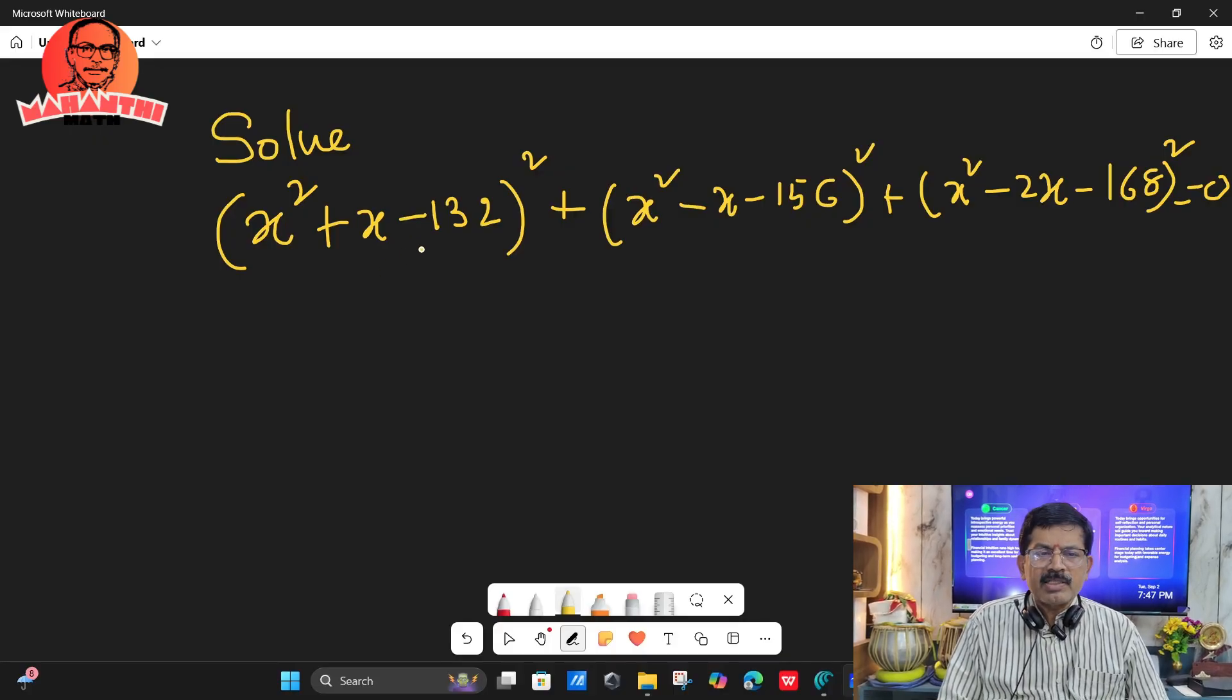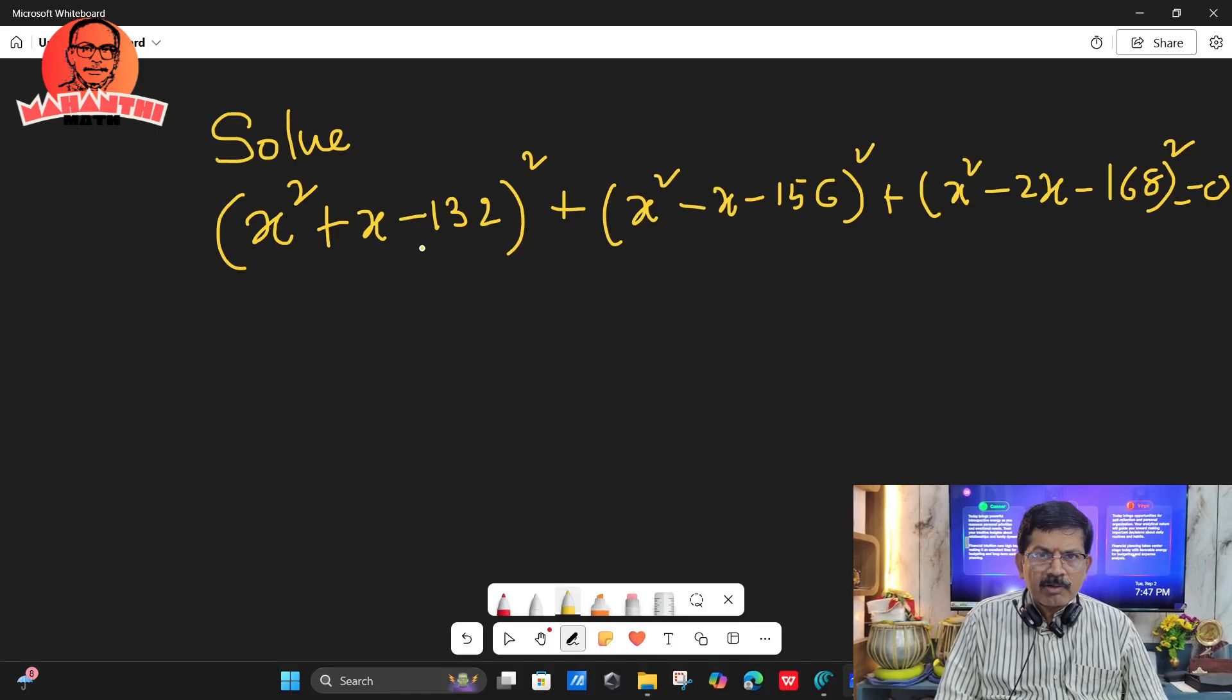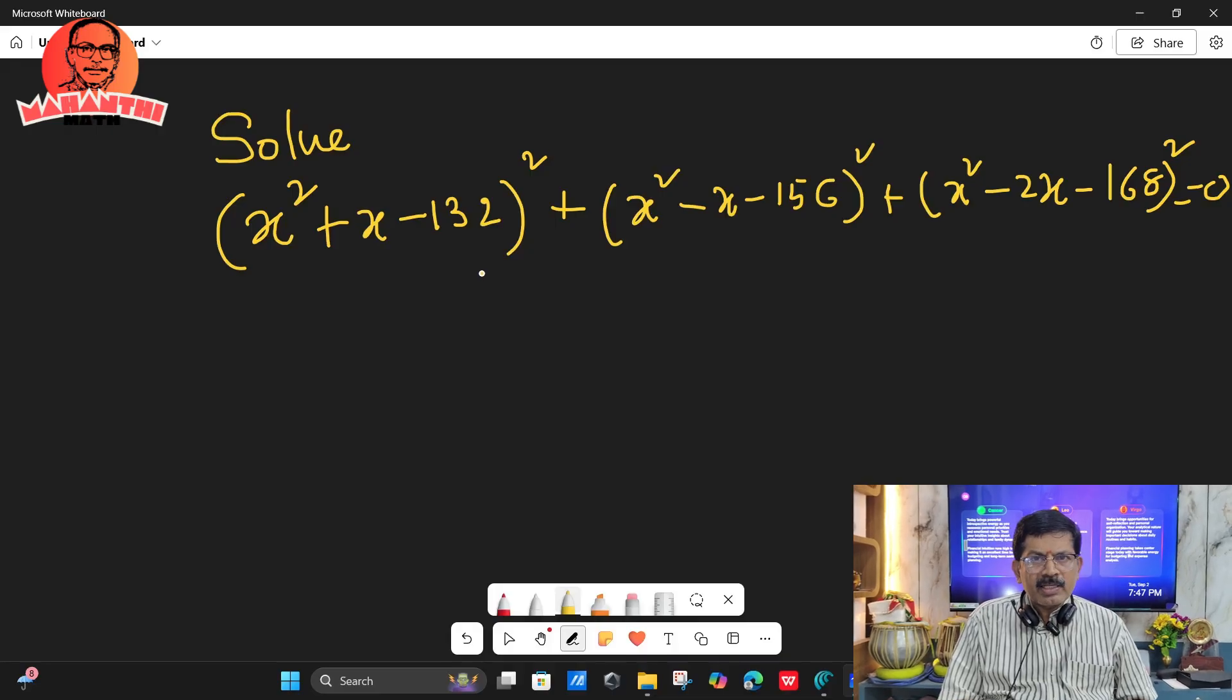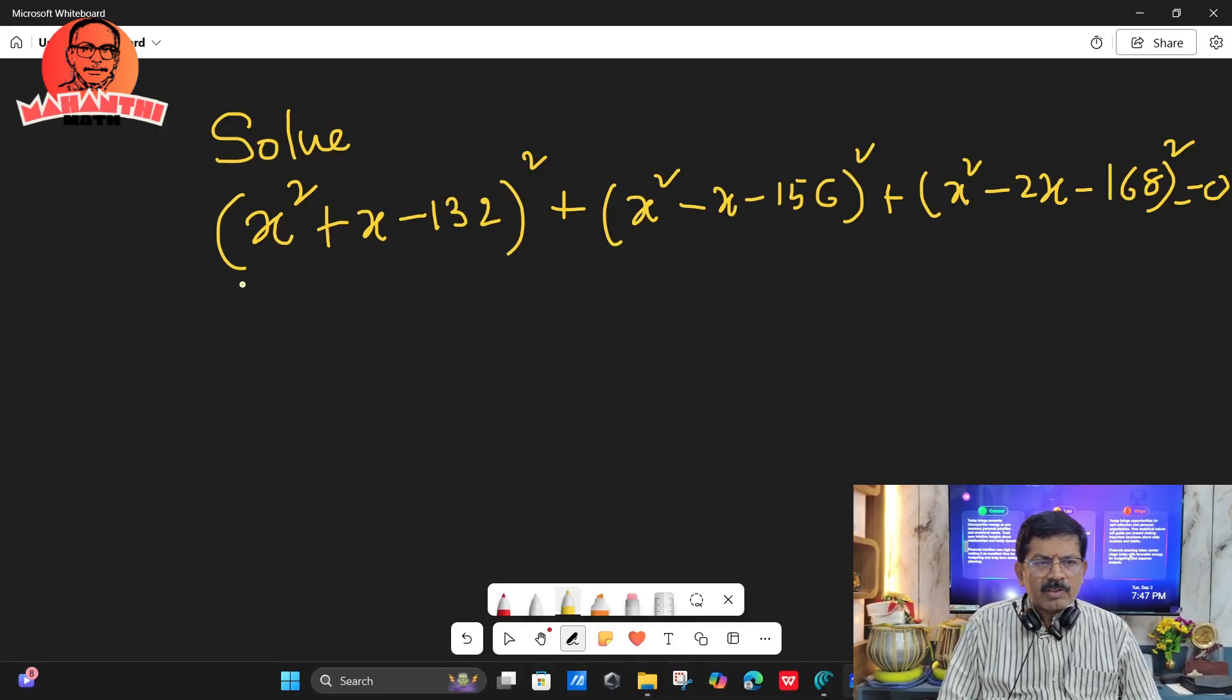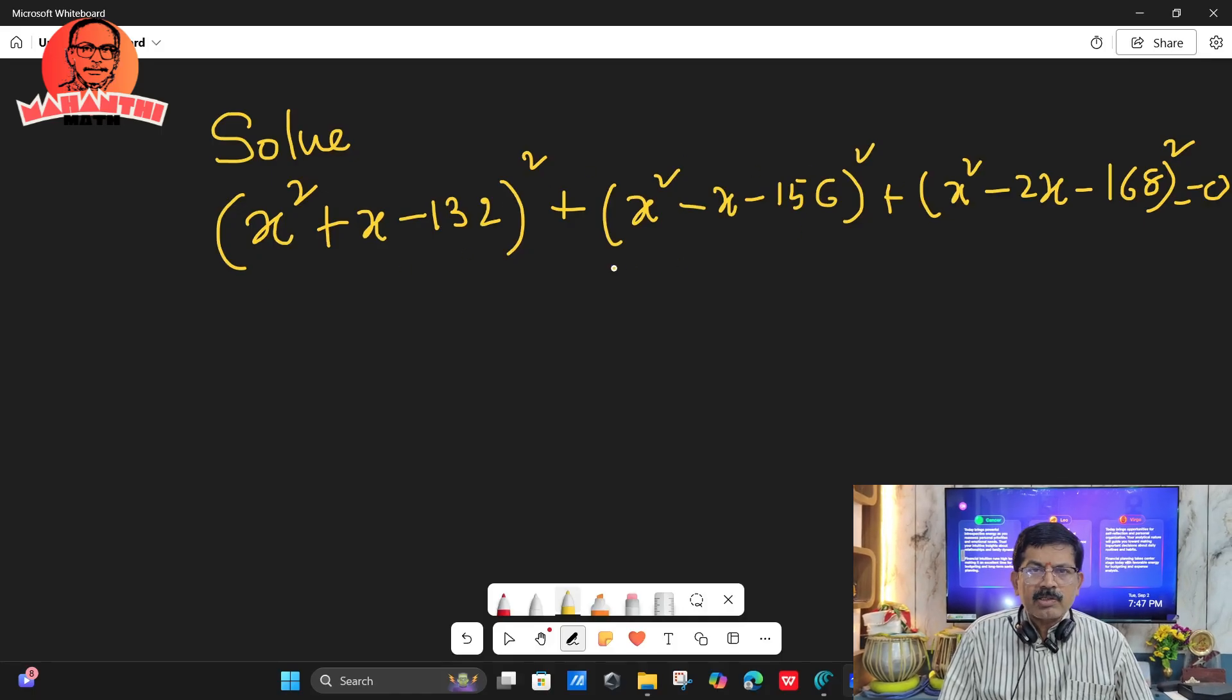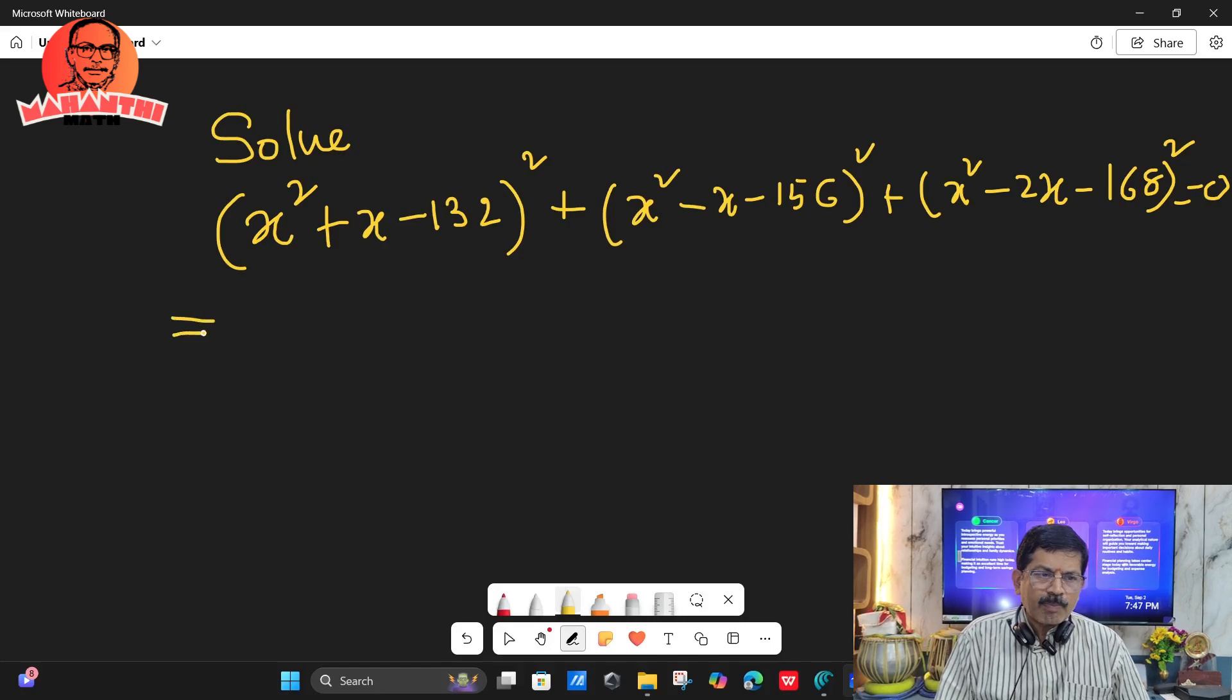But the concept is here: the sum of some non-negative terms are zero, then each number will be zero. You know that the square of any real number is non-negative. So here three terms are there, all the terms have whole squares, so all three terms are non-negative.